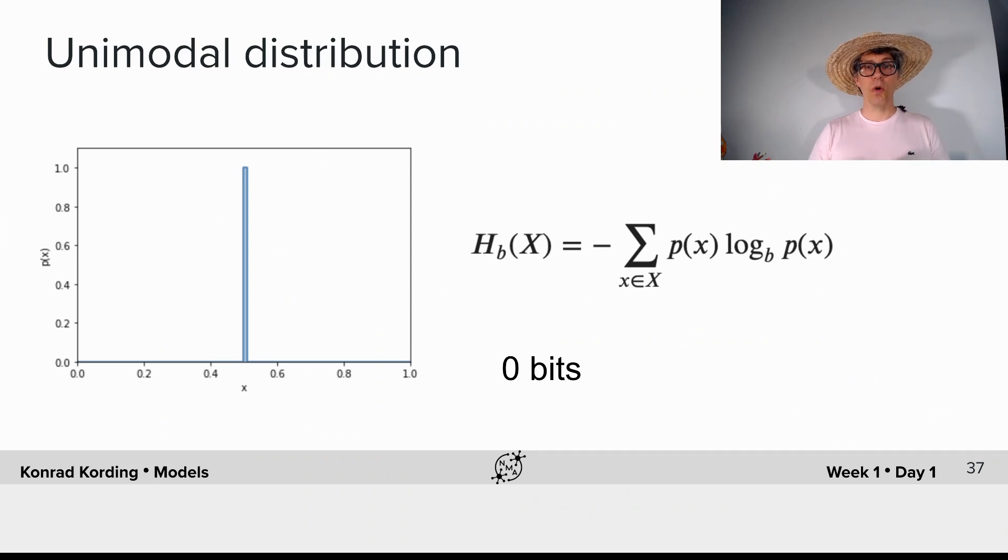So what would be the information in a unimodal distribution? Intuitively, there's no information. It's always the same inter-spike interval. So why would that be the case? Well, p(x) is high. It will be 1 for that value. It will be 0 otherwise. But the log of 1, regardless of what the base is, is 0. Therefore, for a unimodal distribution, the contained information will be 0 bits.